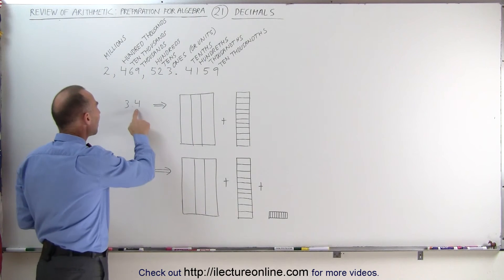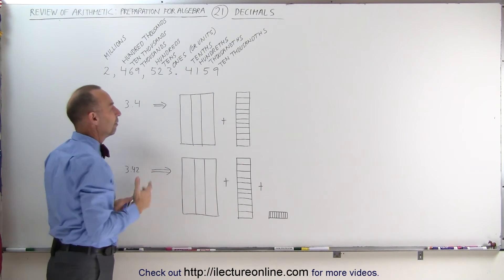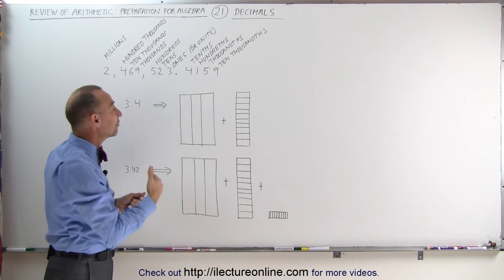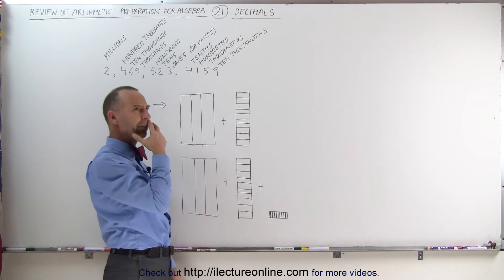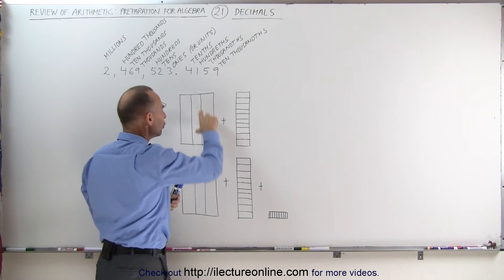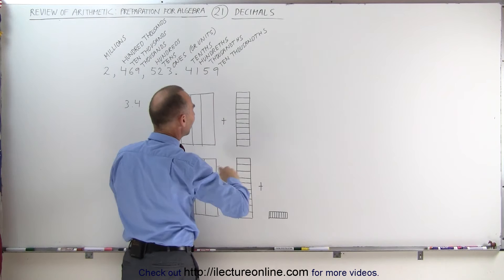Plus, you have a decimal place, 4. That means 4 tenths. 4 tenths means there's 4 out of 10 units to make a whole new unit again. Or maybe better yet, if you take a whole unit and divide it into 10 equal pieces, if you then take 4 of those...